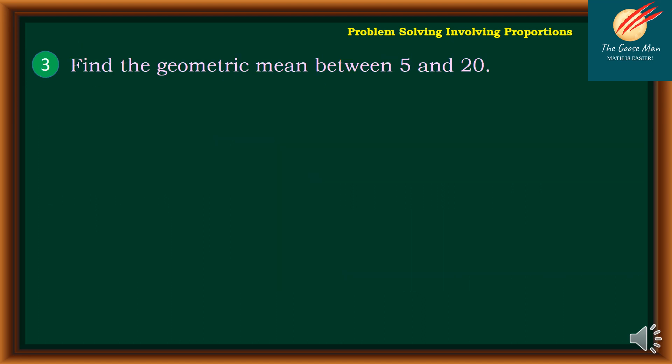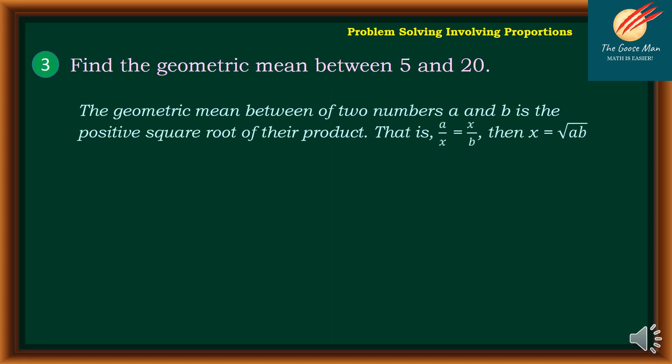Let's move on to problem number 3: find the geometric mean between 5 and 20. The geometric mean between two numbers a and b is the positive square root of their product. That is a over x equals x over b, so x equals the square root of a times b.